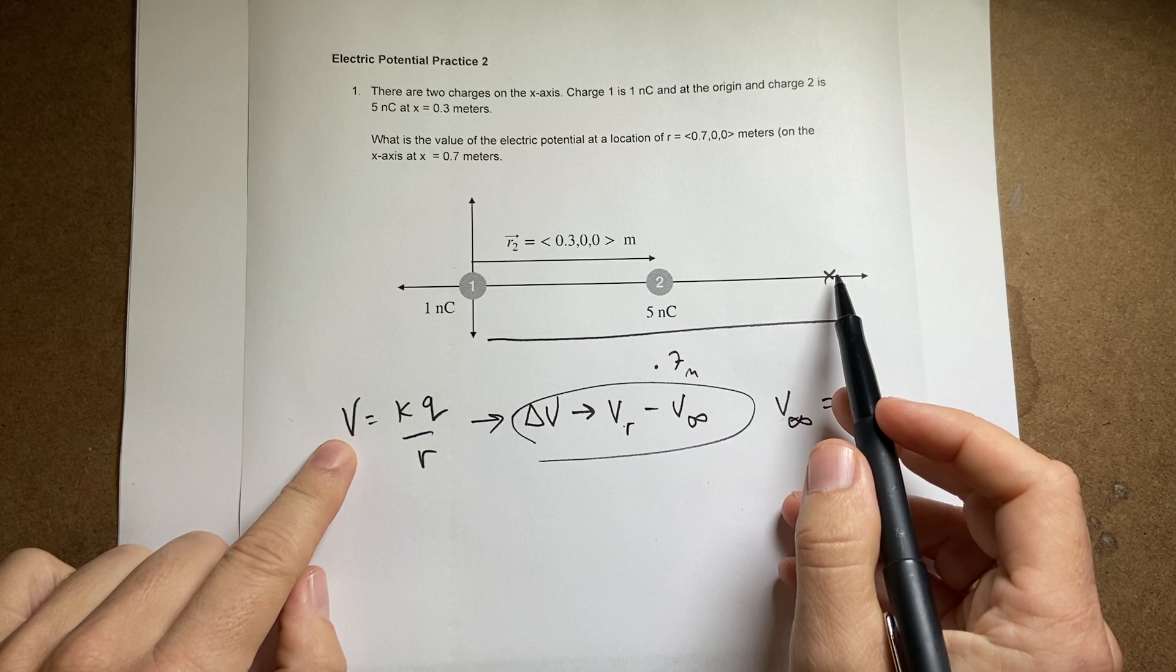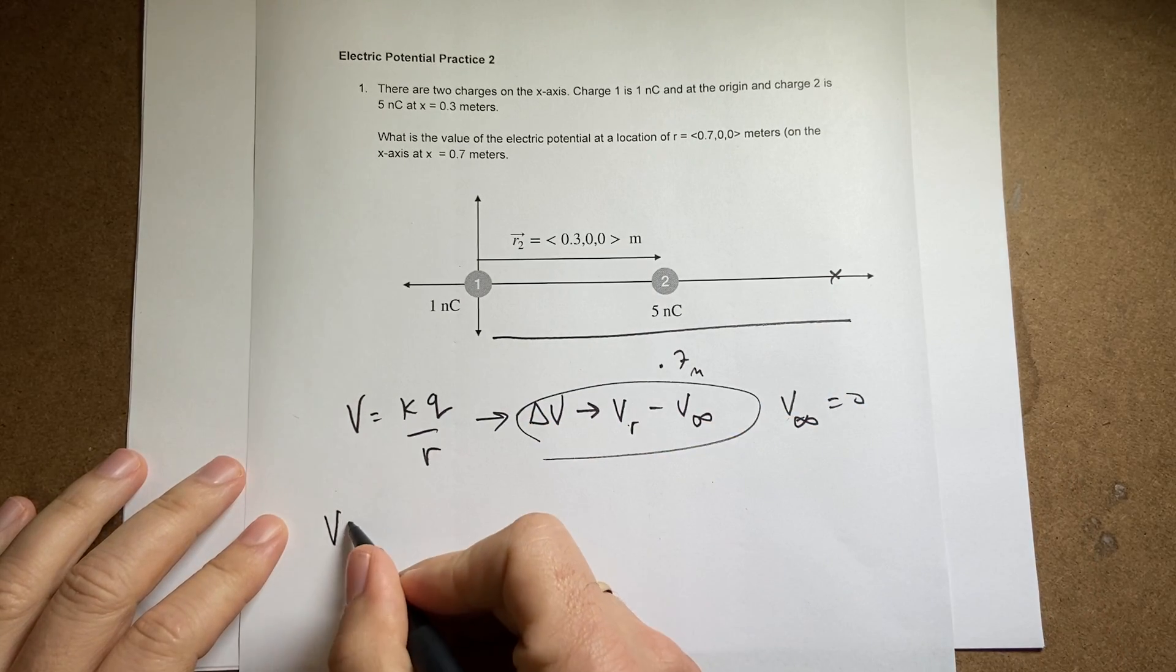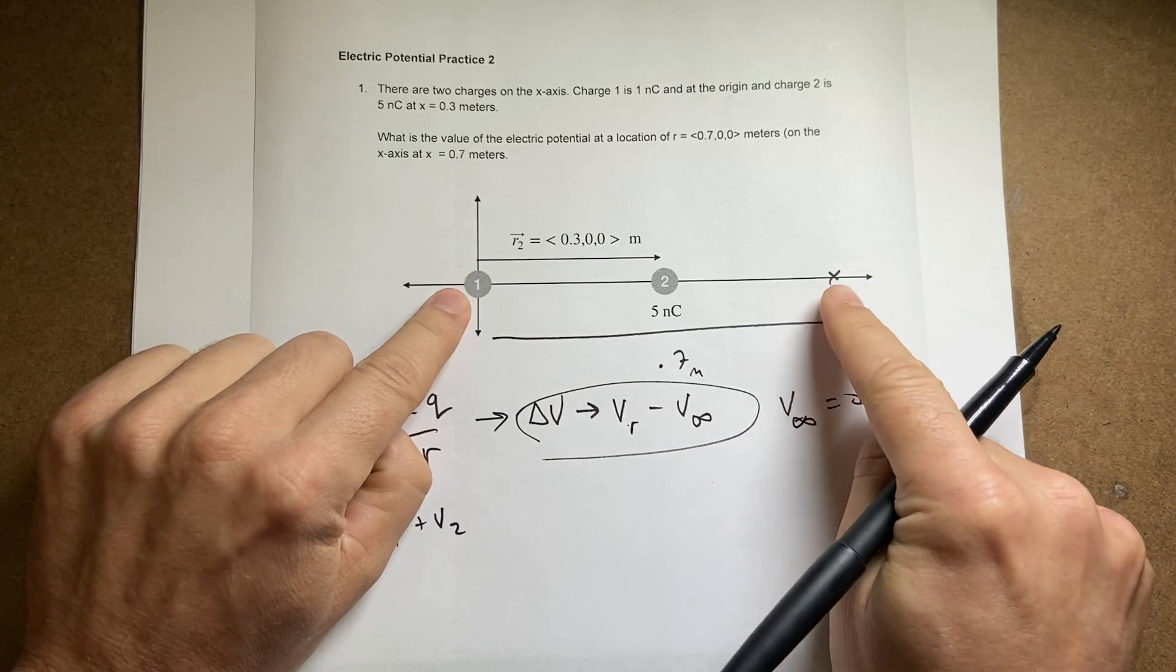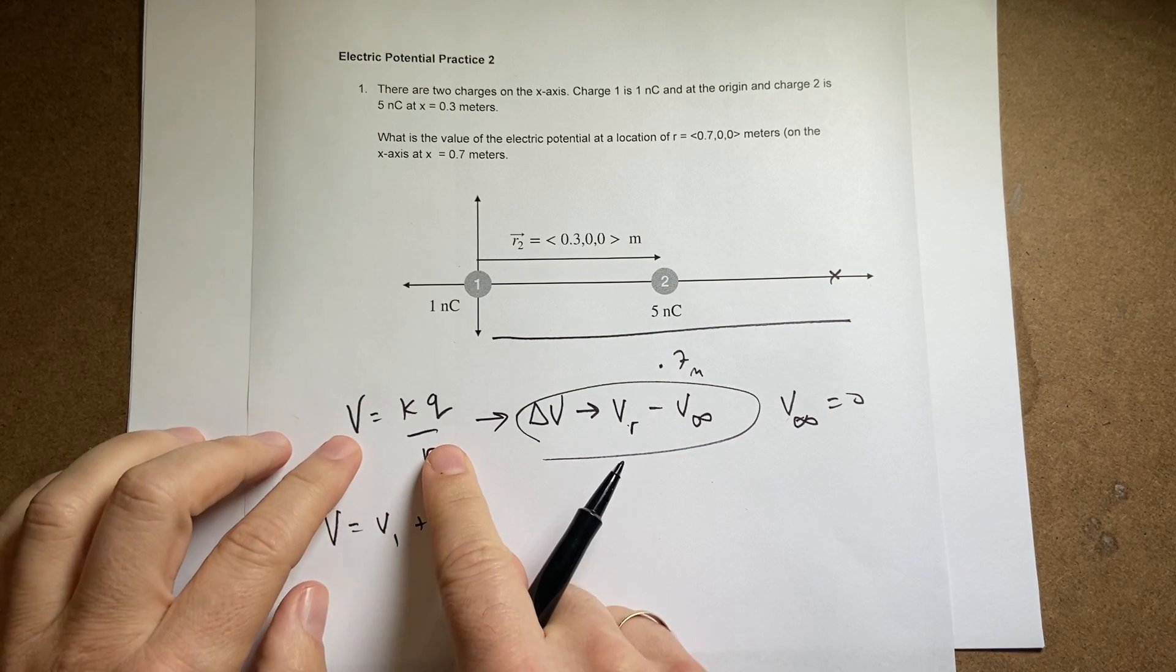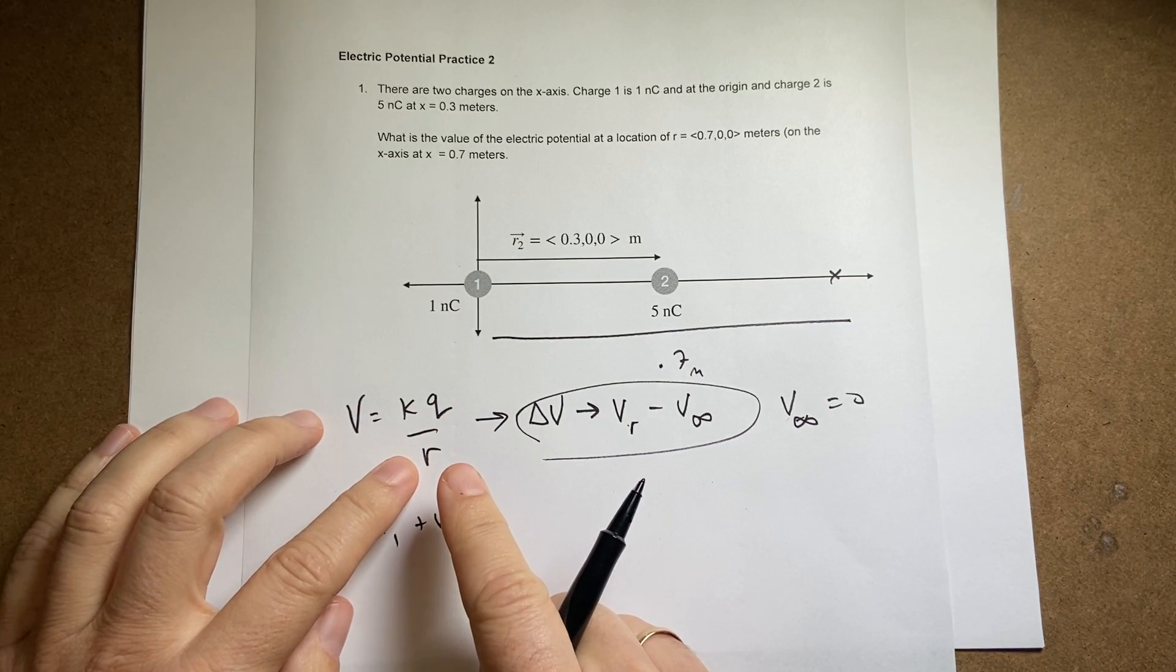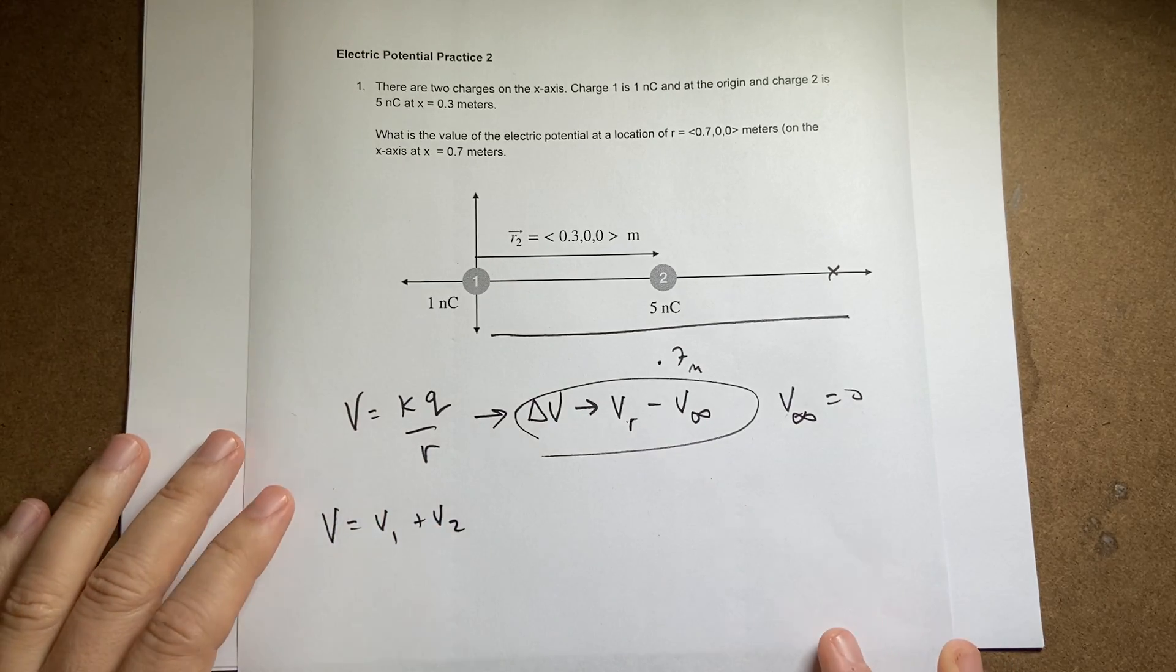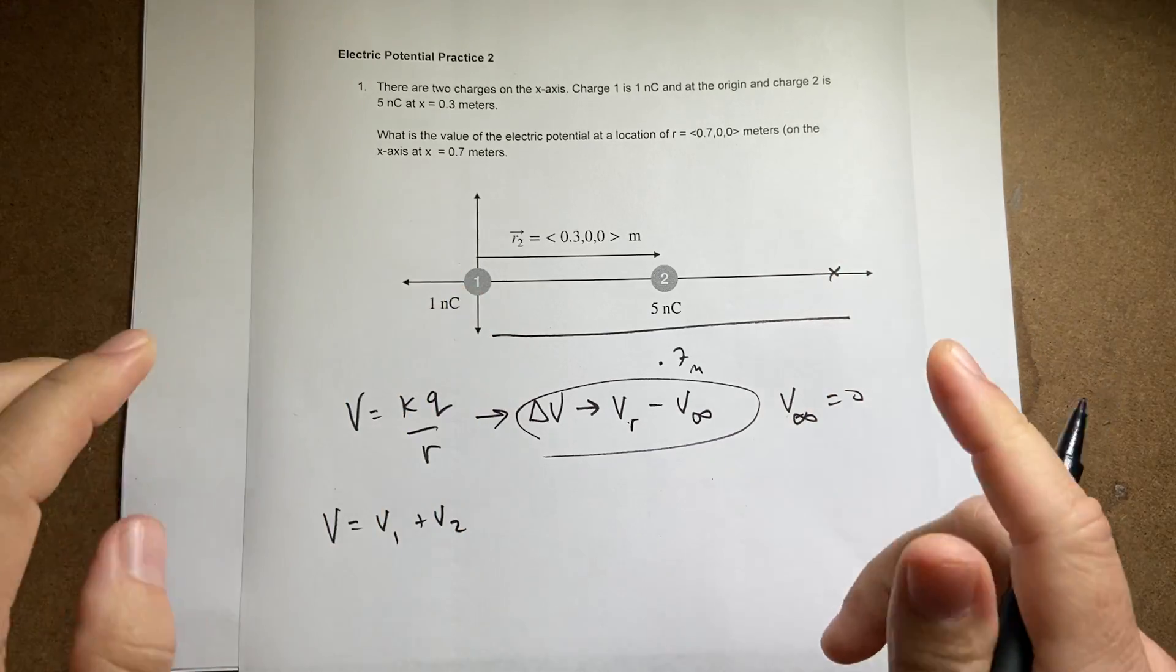But this is the potential due to a single point charge. If I have two point charges, the potential is just the sum of the potentials. So V_total is going to be V_1 plus V_2. So I need to find the potential due to that point charge right here and the potential due to that point charge right there and add them together. Now you'll notice here also that this is all scalar stuff. These are scalars. Potential is a scalar quantity, so we don't need to do vectors.